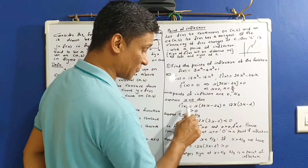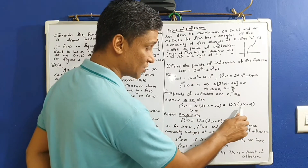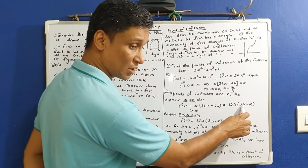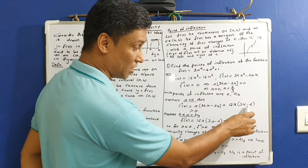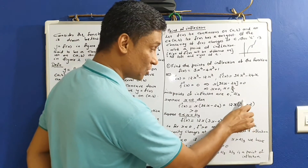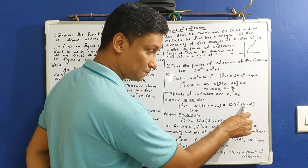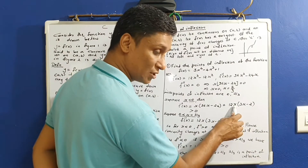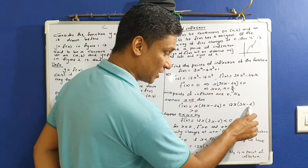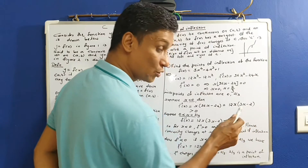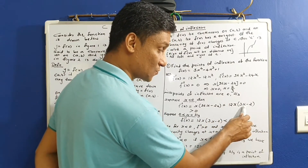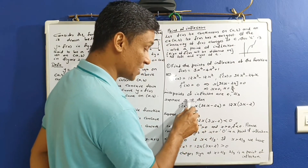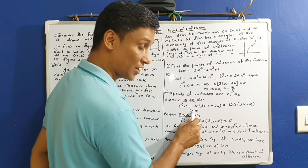For x less than 0, f double dash x equals 12x into 3x minus 2. When x is less than 0, 12x is negative and 3x minus 2 is also negative — negative into negative is positive — so f double dash x is greater than 0. Therefore x less than 0 implies f double dash x greater than 0.